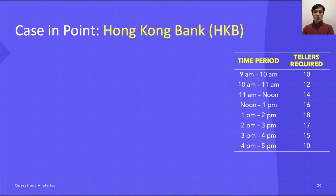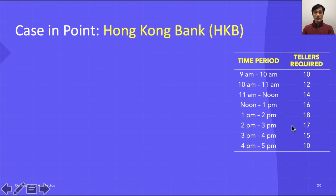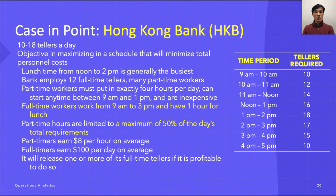Here is the Hong Kong Bank of Commerce and Industry. It is a busy bank that has requirements for between 10 and 18 tellers depending on the time of day. The lunchtime from noon to 2 PM is usually the heaviest. This table indicates the number of workers needed at various hours the bank is open — 9 to 10 AM requires 10 tellers, noon to 2 PM requires 16 to 18 tellers, and it dies down from 3 to 5 PM.